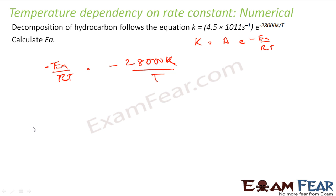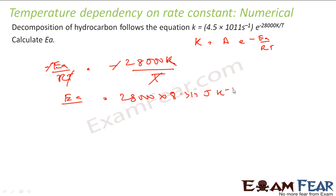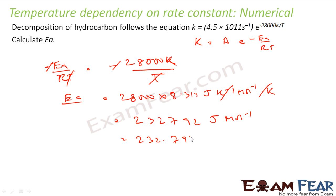This K is kelvin and T is temperature. We have to find the value of Ea by RT, so T and T get cancelled, and the minus signs cancel. Let us put the value of R. Ea is nothing but 2800 into R, where R is 8.314 joule per kelvin per mole, and kelvin cancels. When you solve this you get 23279.2 joule per mole, and that is 23.279 kilojoule per mole — the correct unit for activation energy.